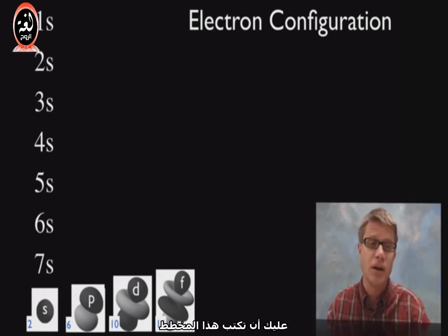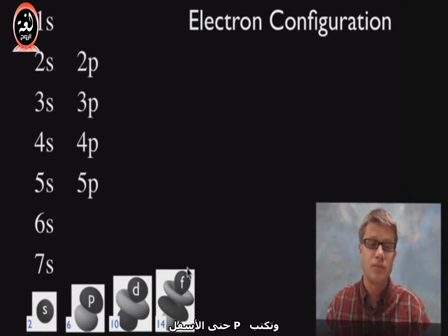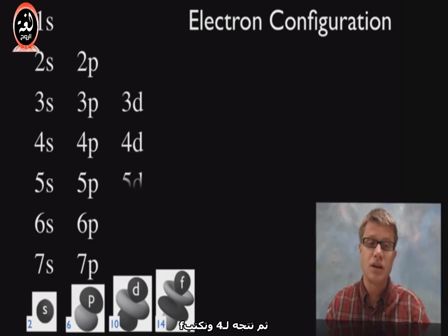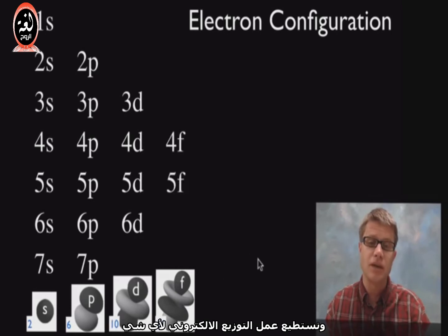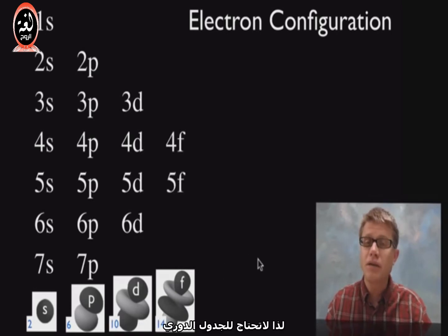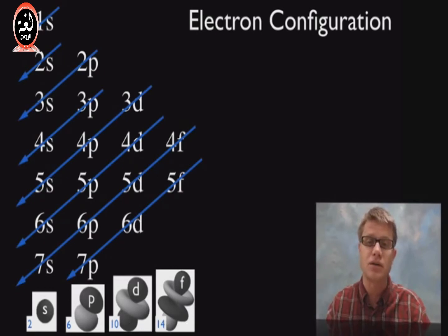To write electron configurations, start with a chart: write 1S and go all the way down to 7S. Then to the right of that write 2S, and write P's all the way down. Then write a 3 and write D's all the way down — you could go all the way to 7 but we'll never really need that. Then write a 4 and write F's all the way down. Once we have that we put diagonal lines in, and then we can do the electron configuration for anything — you wouldn't even need a periodic table.